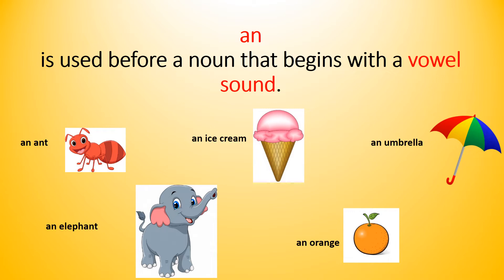Similarly, the next picture is of an elephant. The first letter of this word, 'e', is a vowel. So we use the article 'an' before the word and read it as 'an elephant'. The same rule applies for ice cream — 'i' being a vowel, we say 'an ice cream'. Next picture: orange. 'O' is a vowel, so we say 'an orange'. And the last one, umbrella, starts with 'u'. 'U' being a vowel, we say 'an umbrella'.